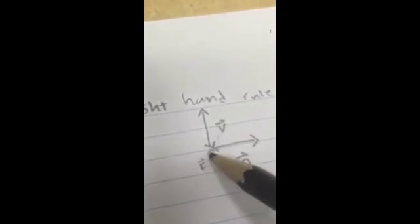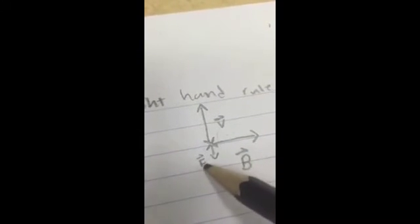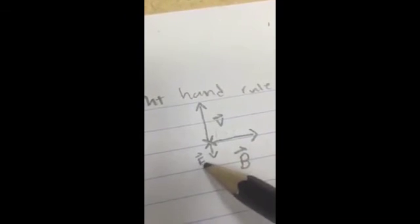In this case, my thumb is going down. So the magnetic force is downward. And I showed that by putting an X here, which denotes a vector going into the page. And I marked it as my magnetic force vector.